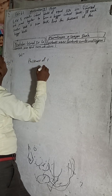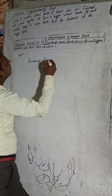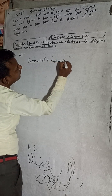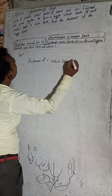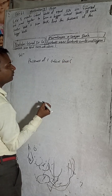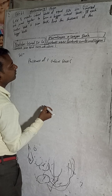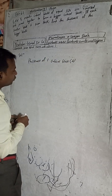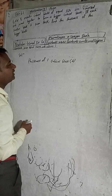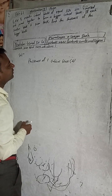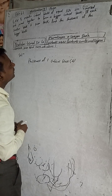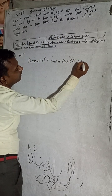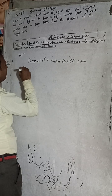Thickness of one cubical block — okay, thickness means we can indicate this by length L, because in a cube the length, breadth, and height are all equal. So thickness equals L, and L is 10 cm.